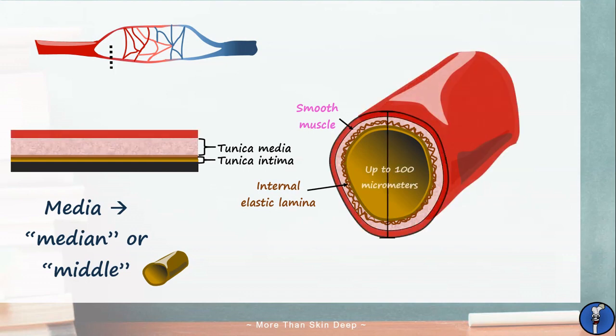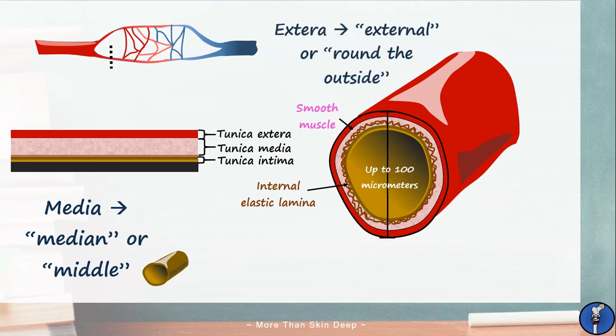Lastly we have a sheath of strong connective tissue known as the tunica externa or sometimes the adventitia. This word comes from external meaning around the outside. Now the ability of arterioles to contract and expand to maintain blood pressure and their narrow lumen reducing the rate at which blood can flow through them has given them the nickname resistance vessels which you'll often see in textbooks.